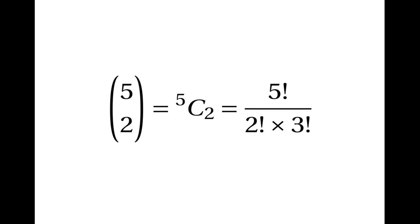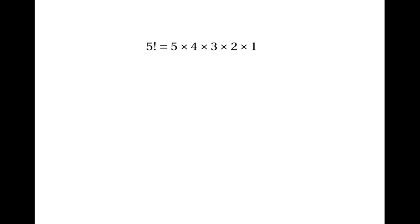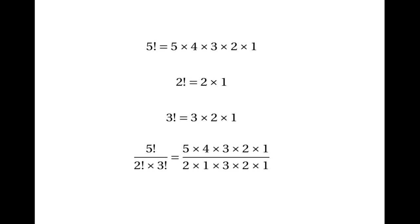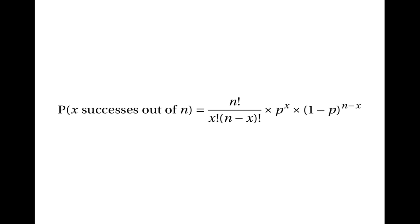For example, 5 choose 2 — the number of ways of getting two successes out of five — is 5 factorial over 2 factorial times 3 factorial. That's 5 times 4 times 3 times 2 times 1, divided by 2 times 1 times 3 times 2 times 1. Most of these numbers cancel out, leaving just 5 times 4 over 2 times 1, which equals 10. So now we can give a more complete version of the binomial formula: the probability of x successes out of n is n factorial over x factorial times n minus x factorial, times p to the power of x times one minus p to the power of n minus x.